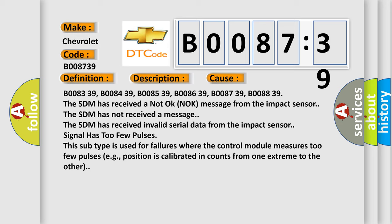Signal has too few pulses. This subtype is used for failures where the control module measures too few pulses, e.g., position is calibrated in counts from one extreme to the other.